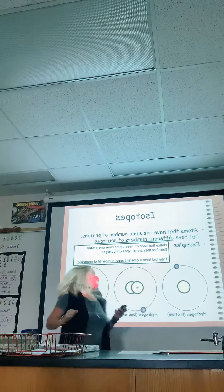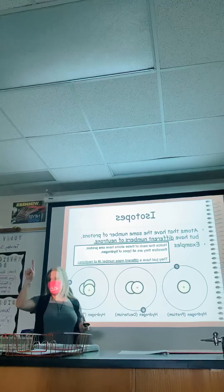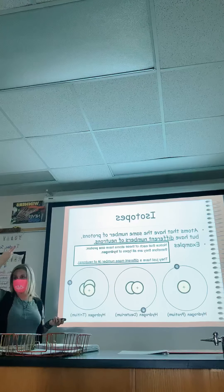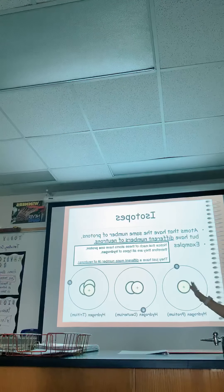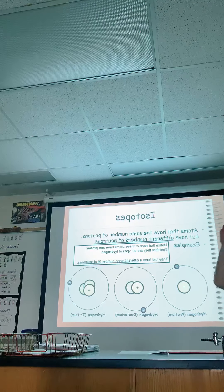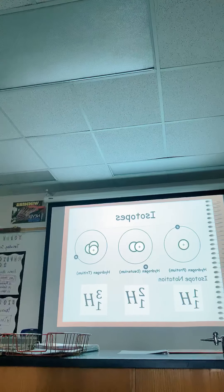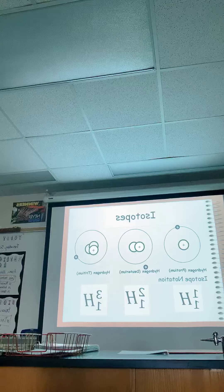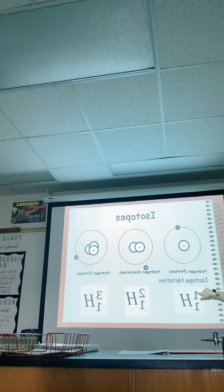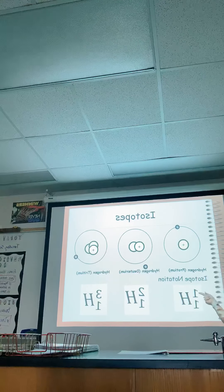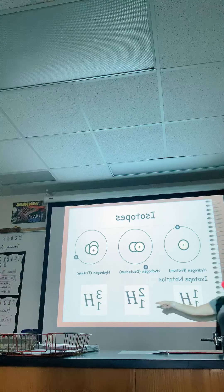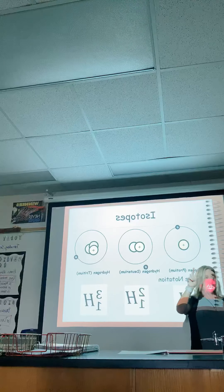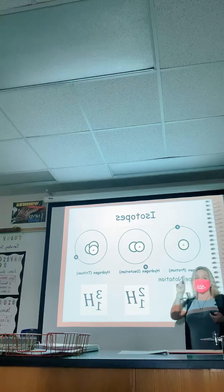If atomic mass equals protons plus neutrons — the first hydrogen isotope has one proton, zero neutrons, so the atomic mass is one. The second has one proton and one neutron, so the atomic mass is two. The third has one proton and two neutrons, so one plus two gives an atomic mass of three. These are naturally occurring different forms of the same atom. They're all hydrogen because they all have one proton.